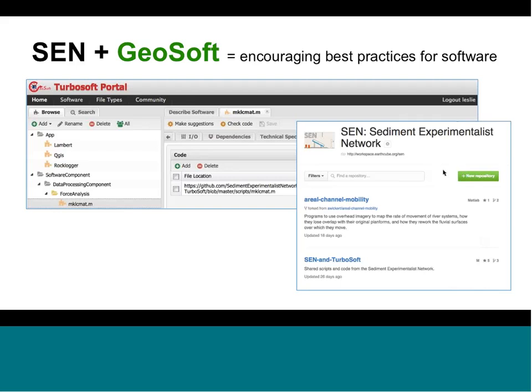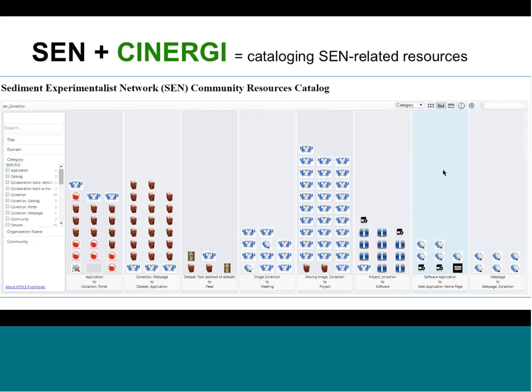We're also working with the Synergy building block, which is building a catalog of EarthCube resources. Synergy is working to build community resource viewers — this screenshot shows a number of different resources identified by the SEN community. A resource can be many things: a dataset, a web page, a journal, a Twitter feed. Getting these all in one place and visualizing them in different ways is one way of discovering new resources.